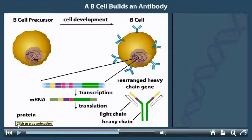Light and heavy chains then assemble to make an immunoglobulin that is unique to a particular B cell. As each B cell of the immune system develops, it randomly joins together a unique combination of segments, producing the body's millions of unique antibodies.